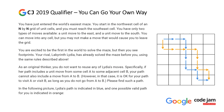You are excited to be the first to solve the maze, but then you see footprints. Your rival, Labyrinth Lydia, has already solved the maze before you using the same rules. As an original thinker, you do not want to reuse any of Lydia's moves. Specifically, if her path includes a unit move from some cell A to some adjacent cell B, your path cannot also include a move from A to B. However, it is okay for your path to visit A or visit B, as long as you do not go from A to B.